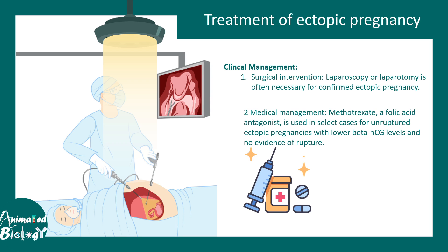Both folic acid and methotrexate are important for dividing cells. In the embryo, cells are mostly dividing, so when methotrexate is given, dividing cells are severely affected and the embryonic cells cannot divide to give rise to further germ layers. This is how ectopic pregnancy can be pharmacologically terminated.